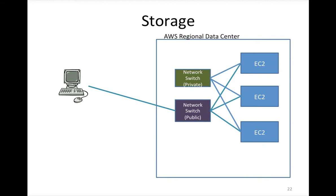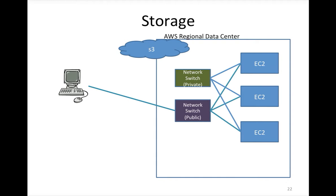This is how an AWS regional data center might look — you have EC2 instances and network switches to connect with the external world. On top of that, there is a cloud-based storage called S3. The beauty of S3 is you can access it over the network without attaching it to any device. You can connect your PC to S3 and access your data whether EC2 instances are up or not.